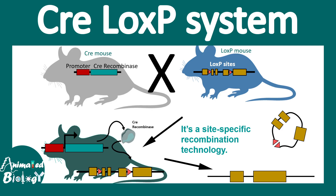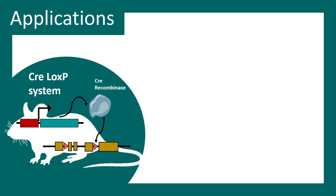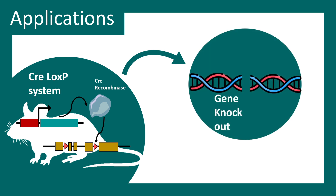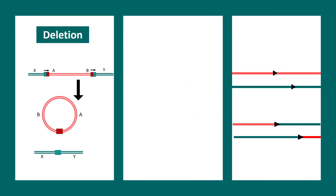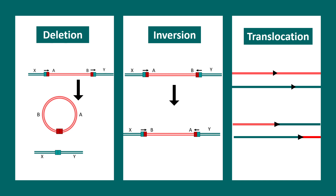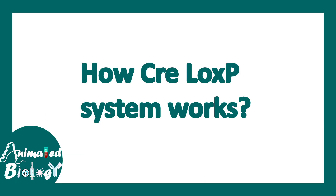In this video we'll talk about the Cre-LoxP system. This is a site-specific recombination based technology frequently used in molecular biology labs to knock out a gene in vivo. Mostly this system is available in mice. The biggest application of the Cre-LoxP system is to create gene knockouts — that means deletion of a portion of the gene. But besides gene knockout, it can also be used for gene deletions, inversions, or translocations. So the Cre-LoxP system has a diversification of applications.